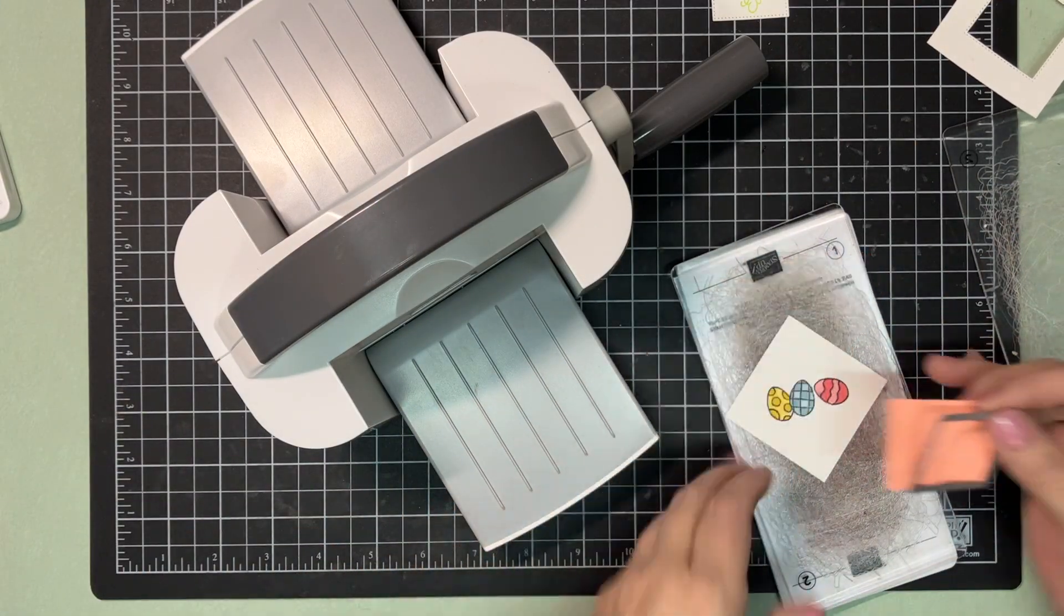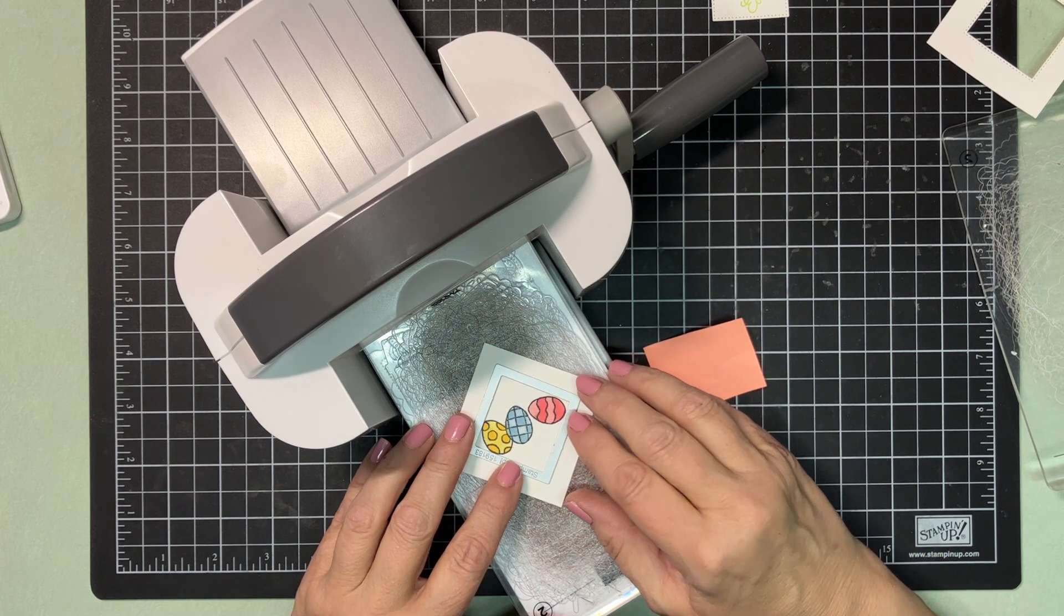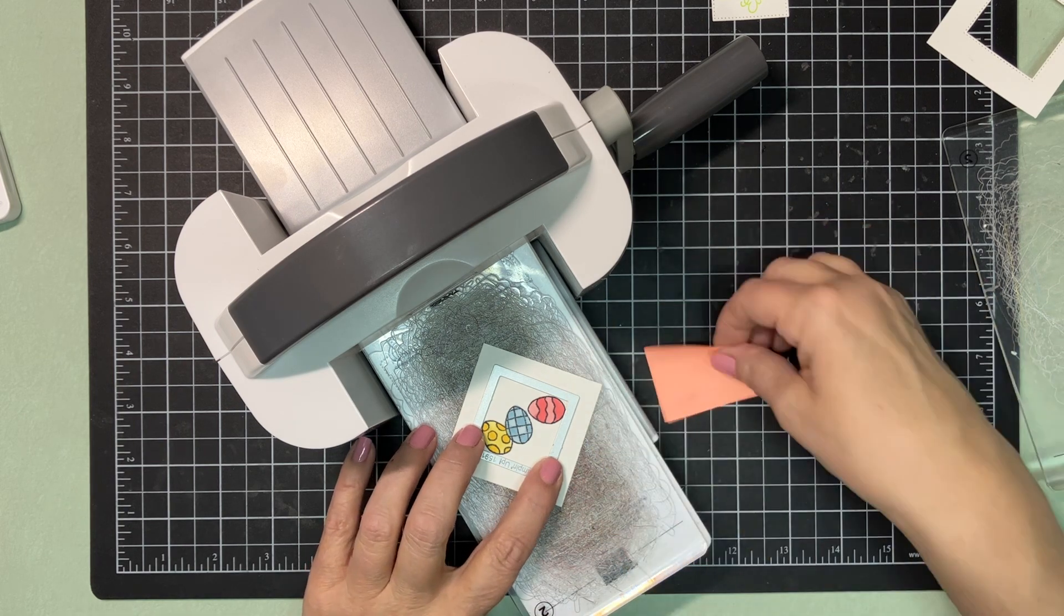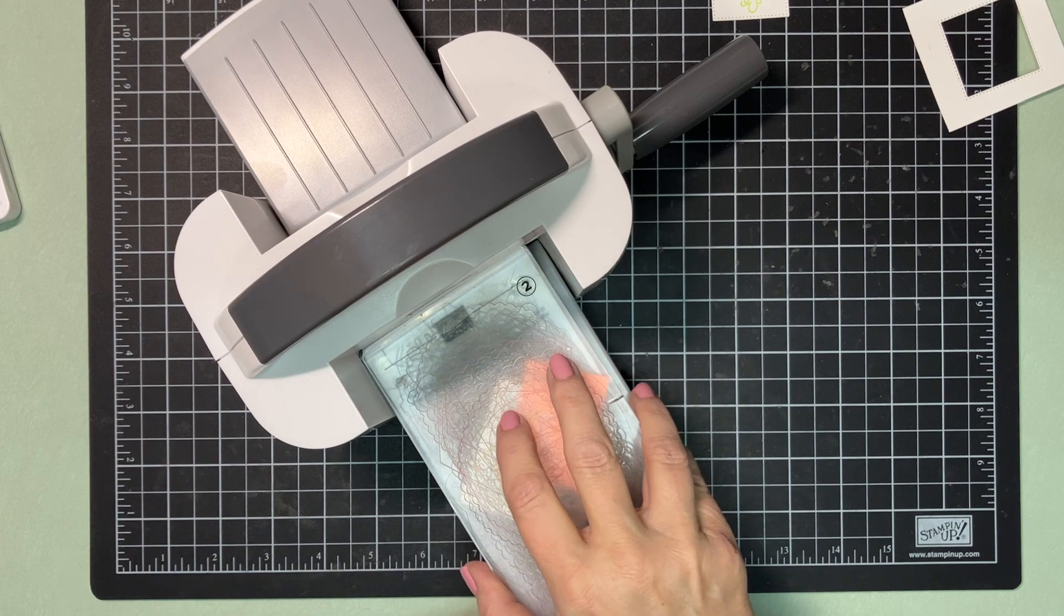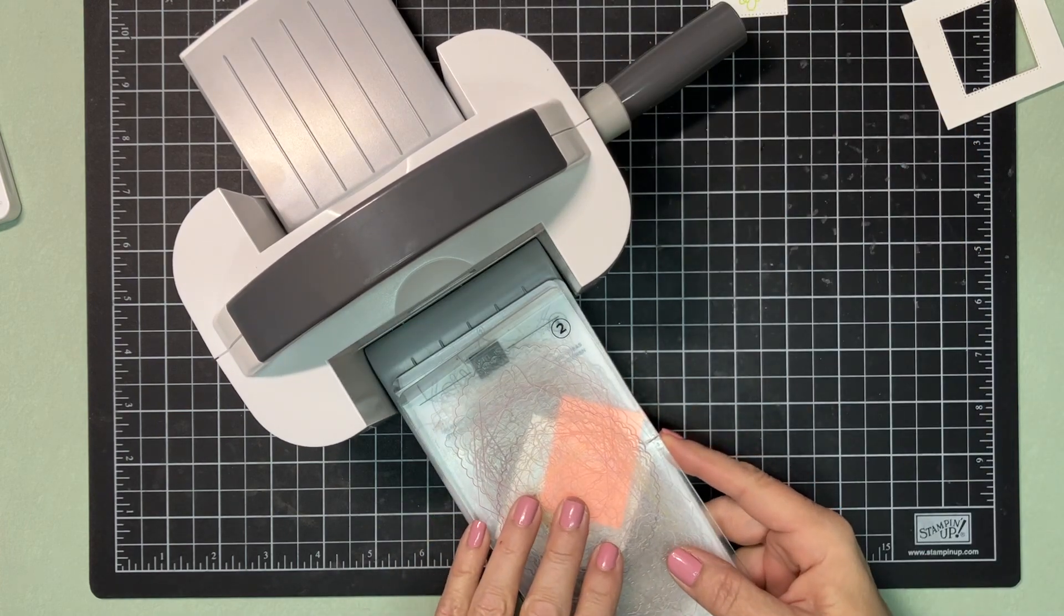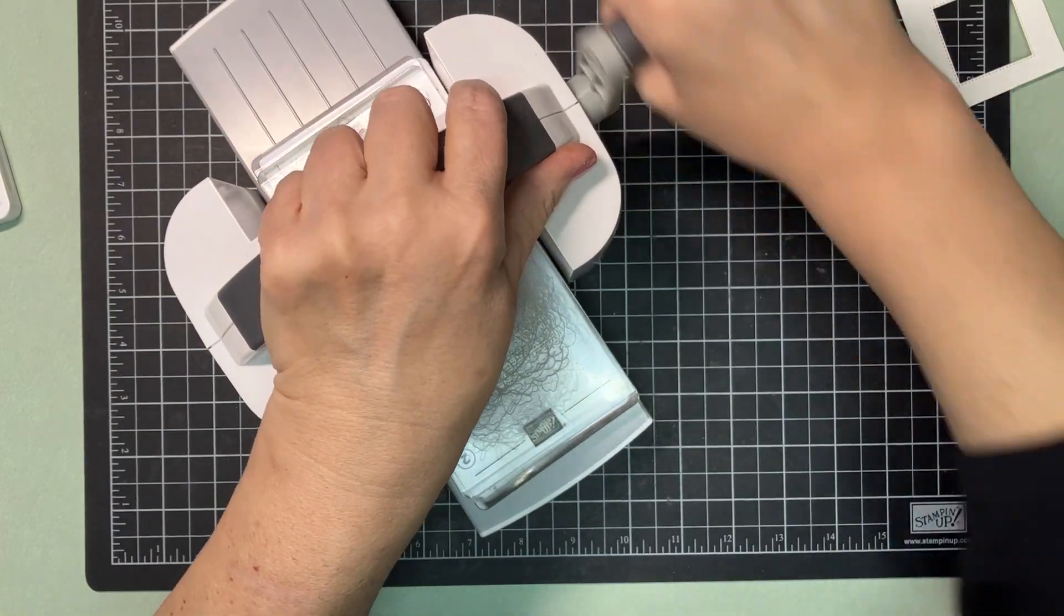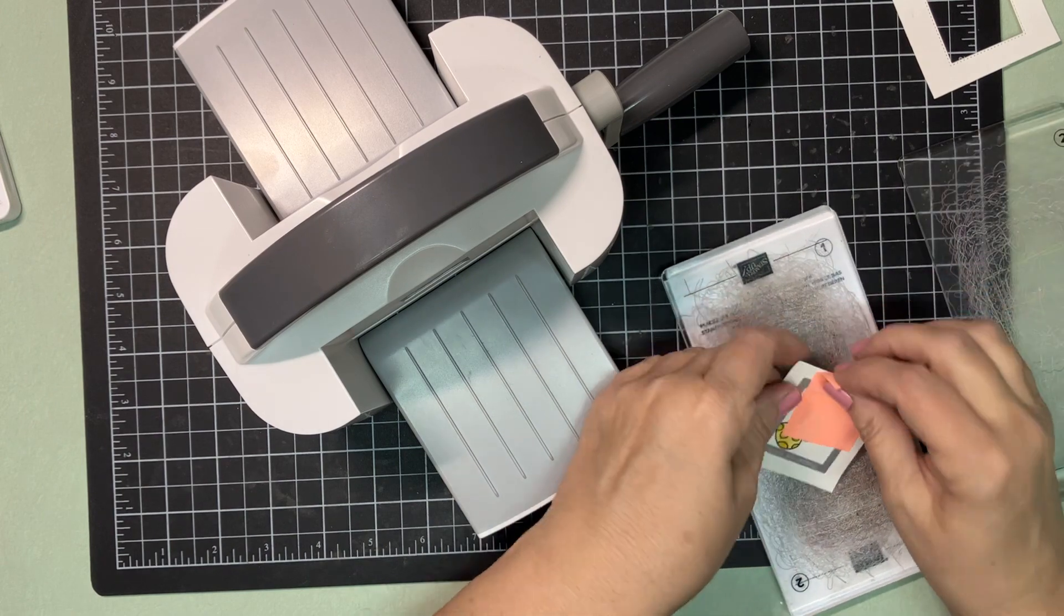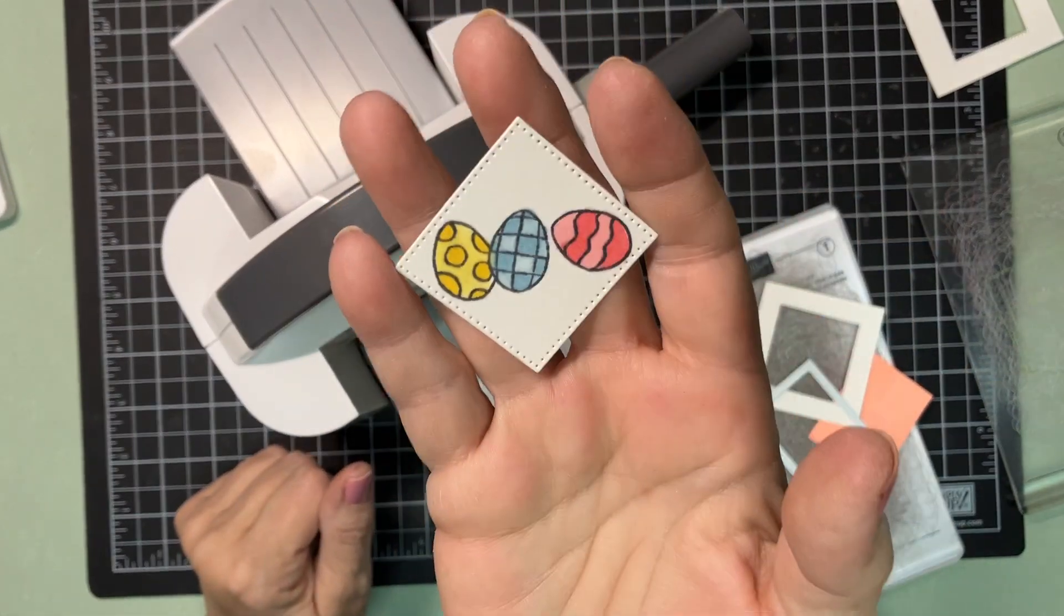Now you either cut the corners of this so you can send it through on an angle or you don't and do it this way. Which I'm fine doing that. Sort of line it up the best you can in the center. And send that one through. And there it is all stamped and beautifully stitched. It is right to the edge of those. But it is inside. It doesn't look like it, but it is. It's right to the edge.